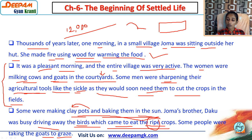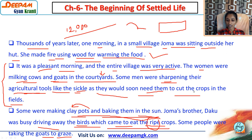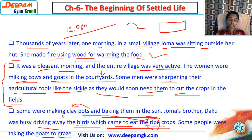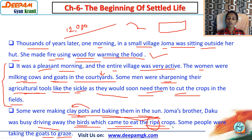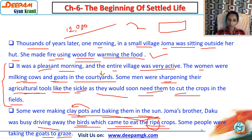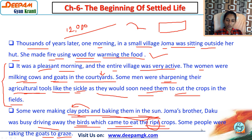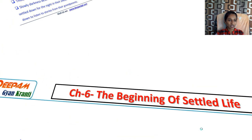We have the perfect picture of society here. Women milked cows and goats in the courtyards. Men sharpened agricultural tools and sickles and prepared to cut the crops. Clay pots were made and baked in the sun. Animals were grazed using farming techniques, and the people had set their lifestyle using different animals.